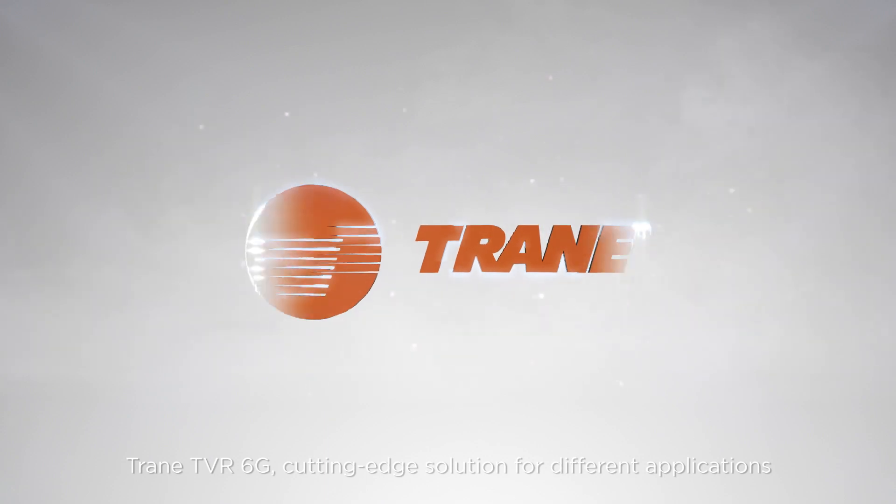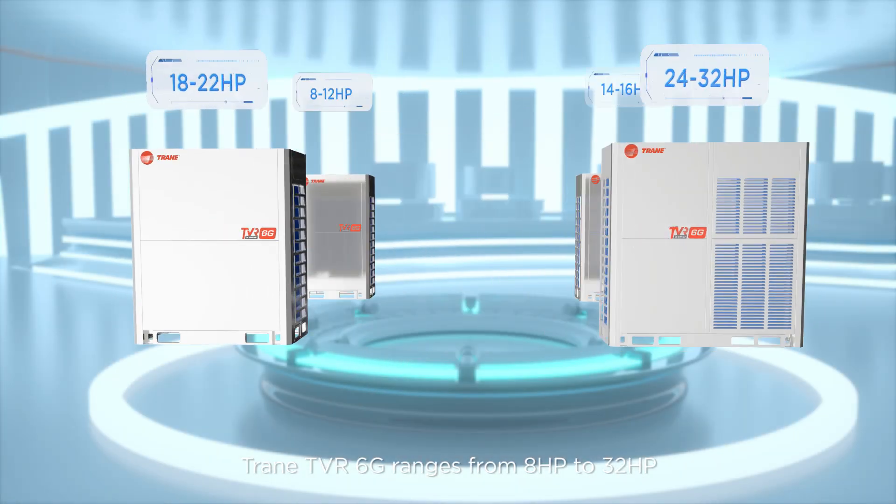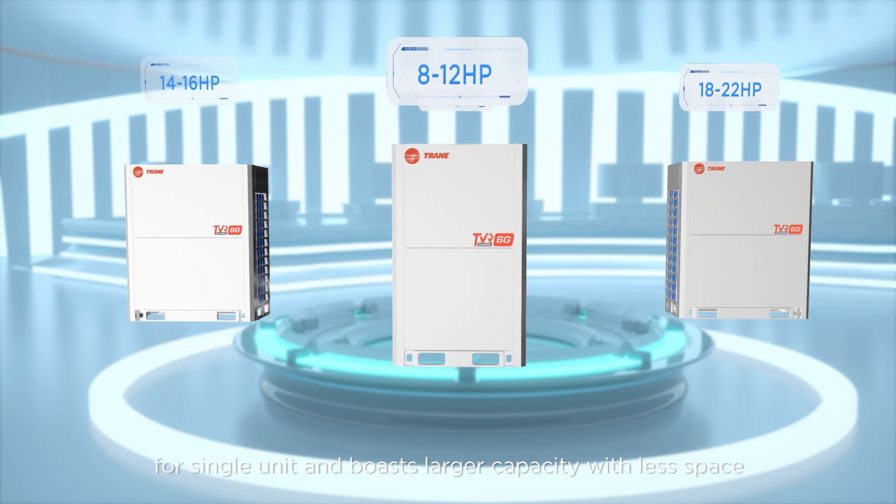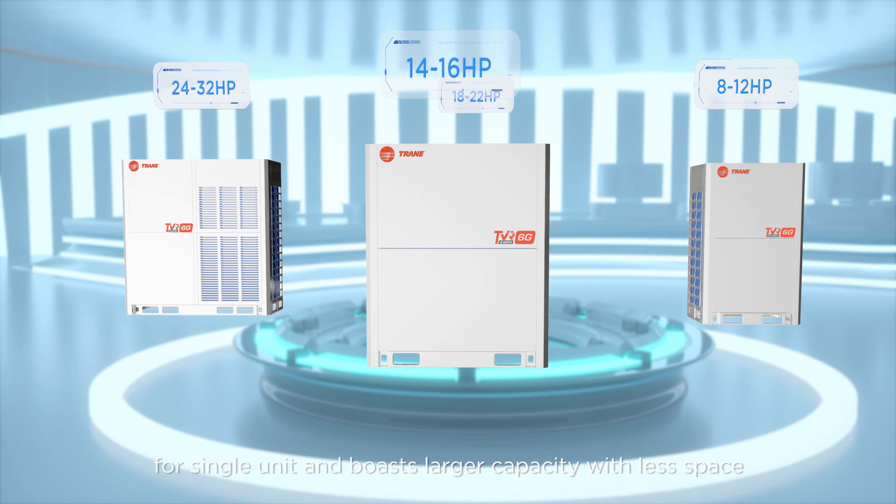TrainTVR 6G is a cutting-edge solution for different applications. TrainTVR 6G ranges from 8 HP to 32 HP for single unit and boasts larger capacity with less space.